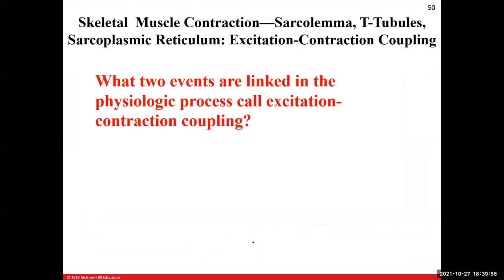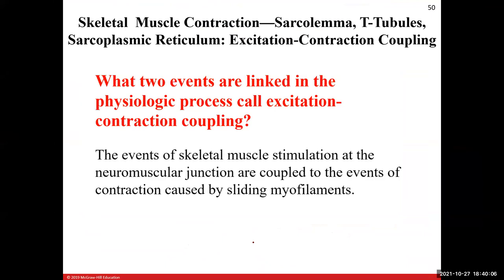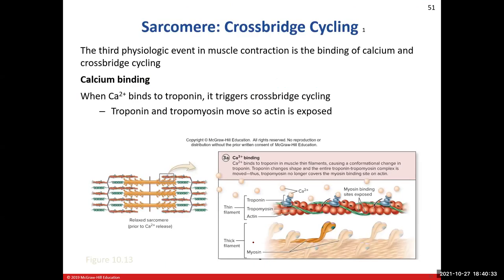Review question: What two events are linked in the physiological process called excitation-contraction coupling? The two events are going to be the muscle stimulation at the neuromuscular junction — that first step — and then what we're about to get into now: cross-bridge cycling, the events of contraction caused by the sliding myofilaments. Those are the two events. Excitation-contraction coupling is the middle step. Now, cross-bridge cycling — this is good stuff.